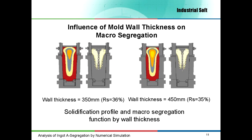To analyze the influence of mold wall on macro-segregation I made two simulations as well. In one of them, the wall thickness has been increased with 100 mm, from 350 to 450 mm. As we can see, the area affected by A-segregation is not much influenced by wall thickness. The segregation area size is only 1% lower by increasing the wall thickness with 100 mm.